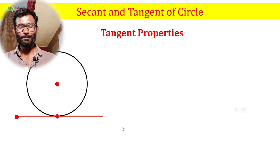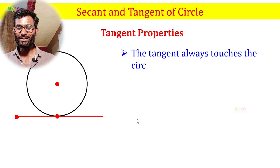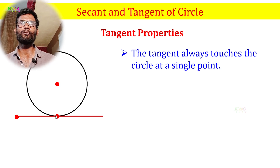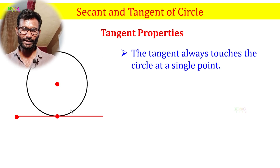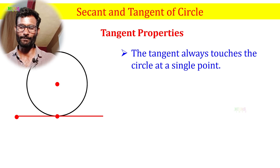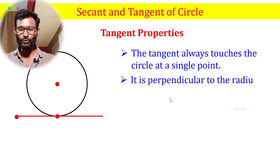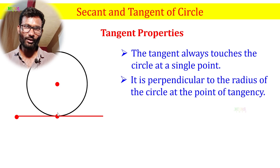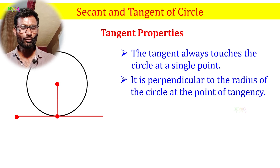Properties of tangent. First, the tangent always touches the circle at a single point — it touches the circle at only one point. Second, it is perpendicular to the radius of the circle at the point of tangency. The tangent and the radius are perpendicular to each other at the point of contact. This is the most important property.